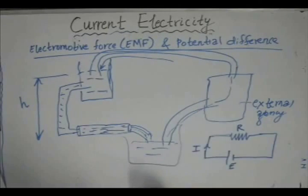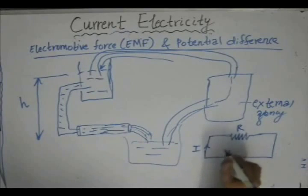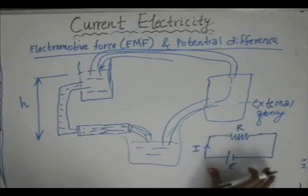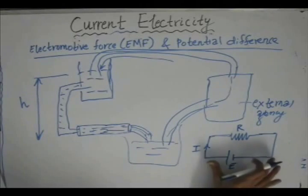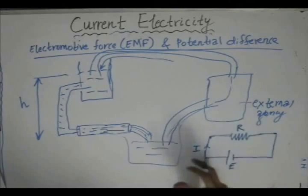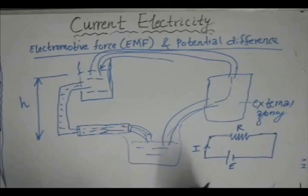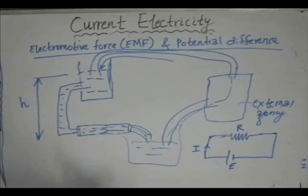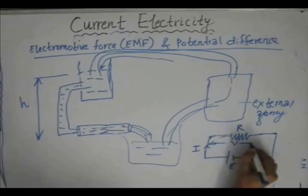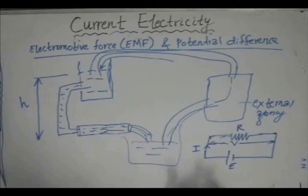Because of the flow of charges, there is a potential drop across the conductor. In the presence of EMF, there is a potential difference between the ends of the conductor, and because of this difference in potential, the current flows through the circuit. However, the potential drop V observed across the conductor may not always be equal to the EMF of the cell.